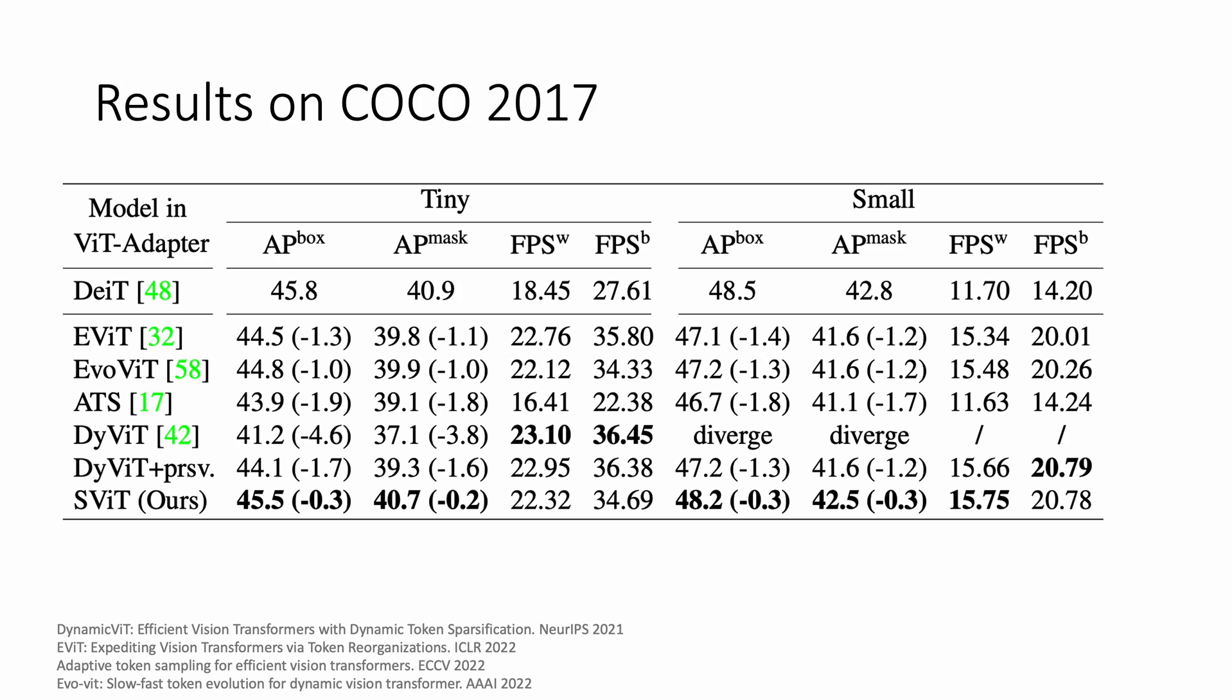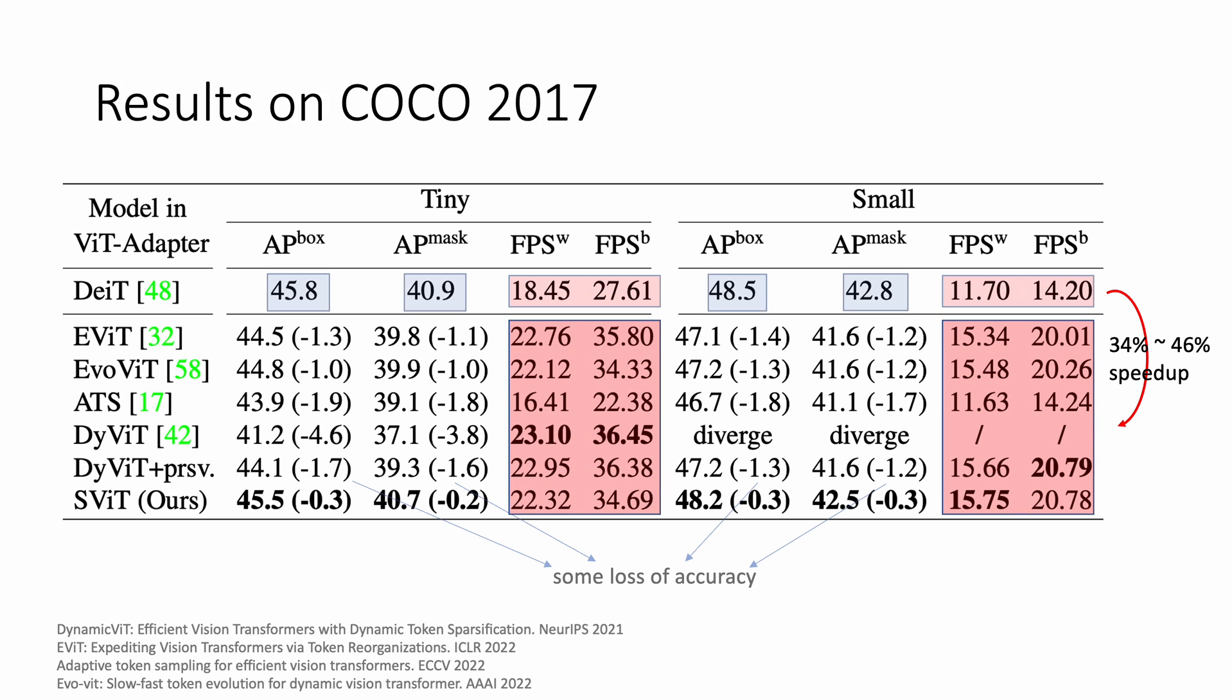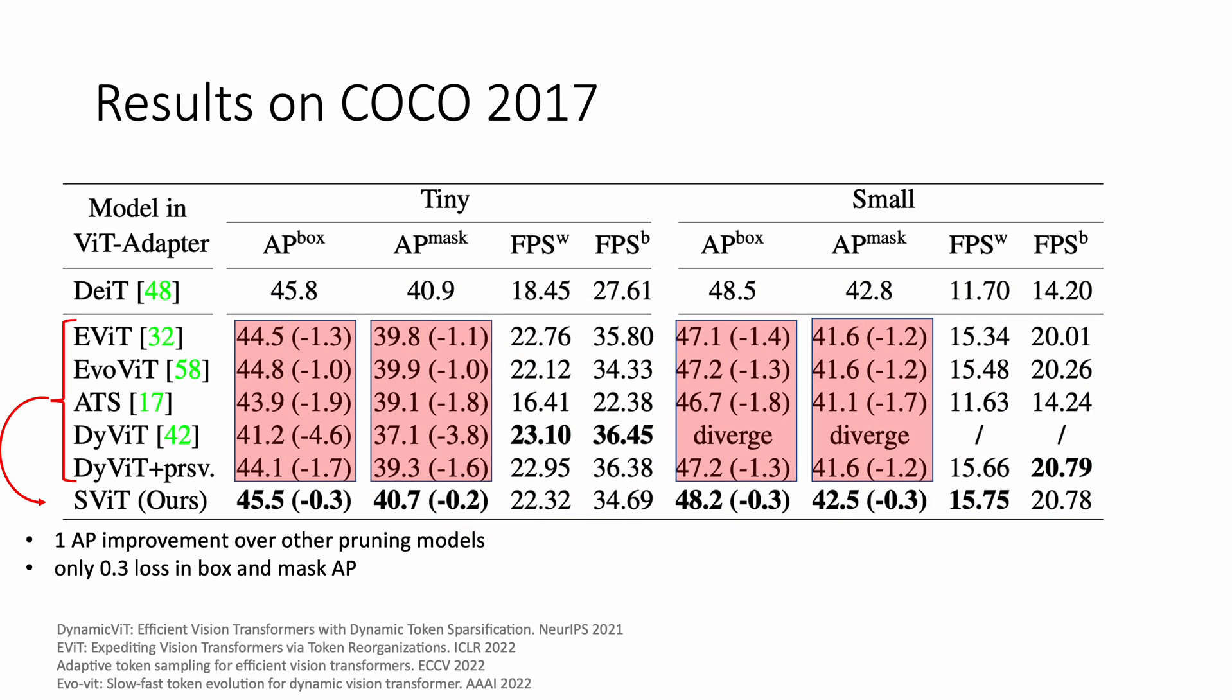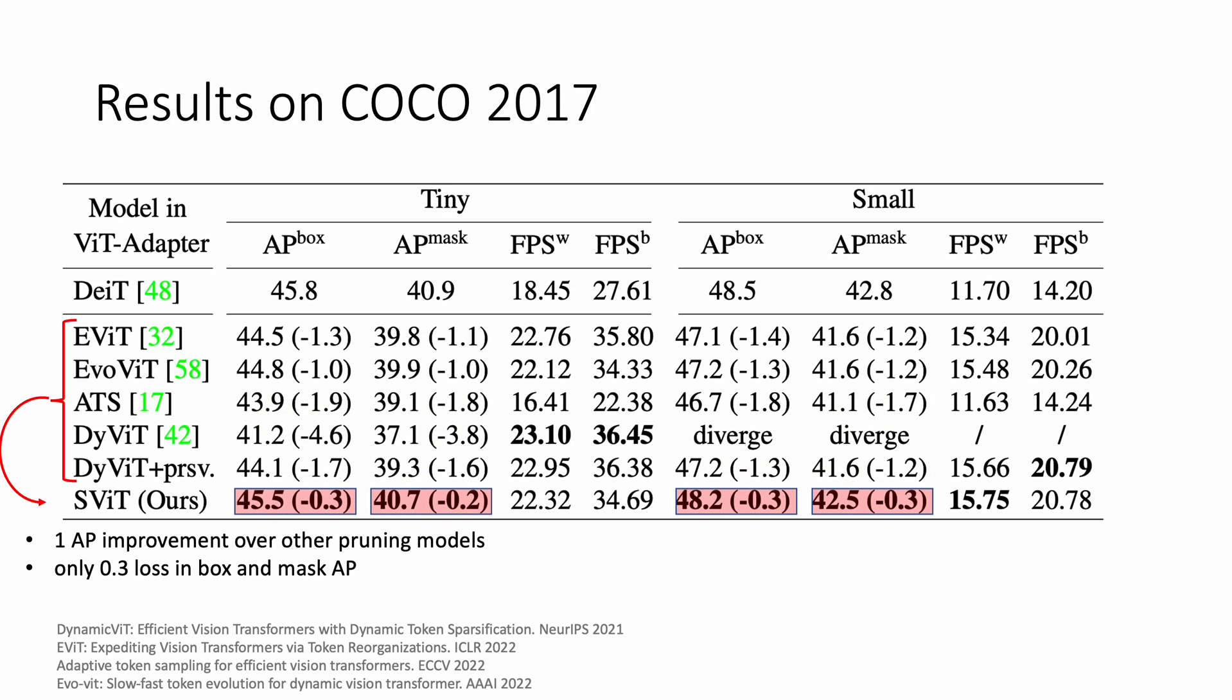Our experiments on COCO object detection and instance segmentation present that token pruning methods can accelerate VIT adapter backbones by 46% with some loss of accuracy. Our selective vision transformer provides about 1AP or more improvements over other token pruning methods and preserves most of the performance of a dense VIT model.